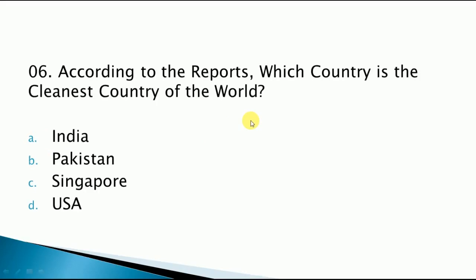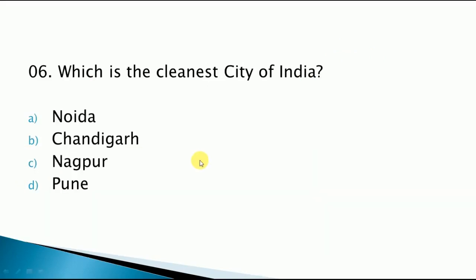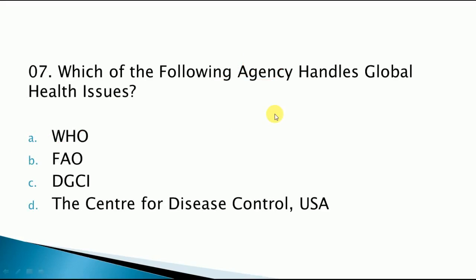According to reports, which is the cleanest country in the world? The correct answer is Singapore. Which is the cleanest city of India? The answer is Chandigarh. Which agency handles global health issues? World Health Organization — they are also handling COVID-19.